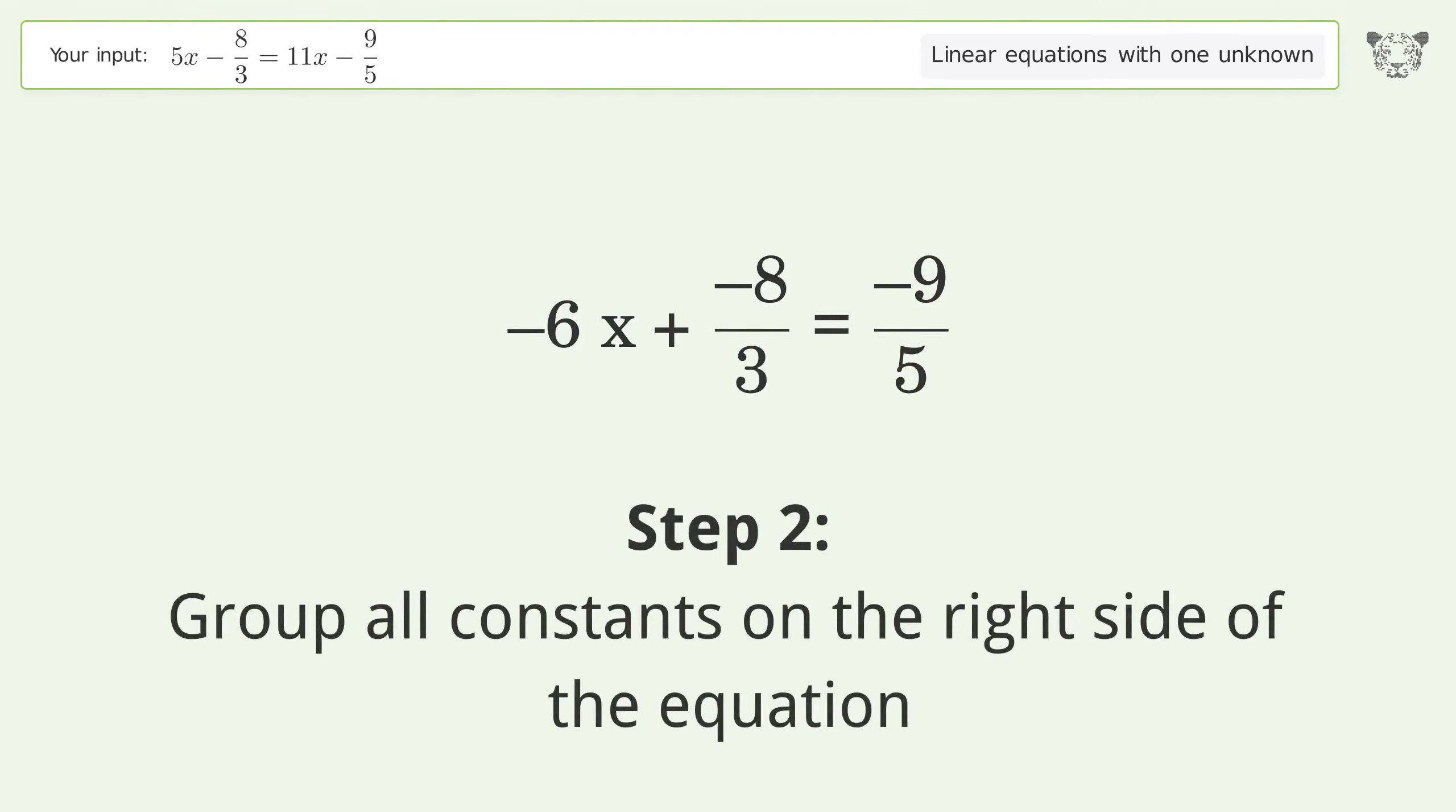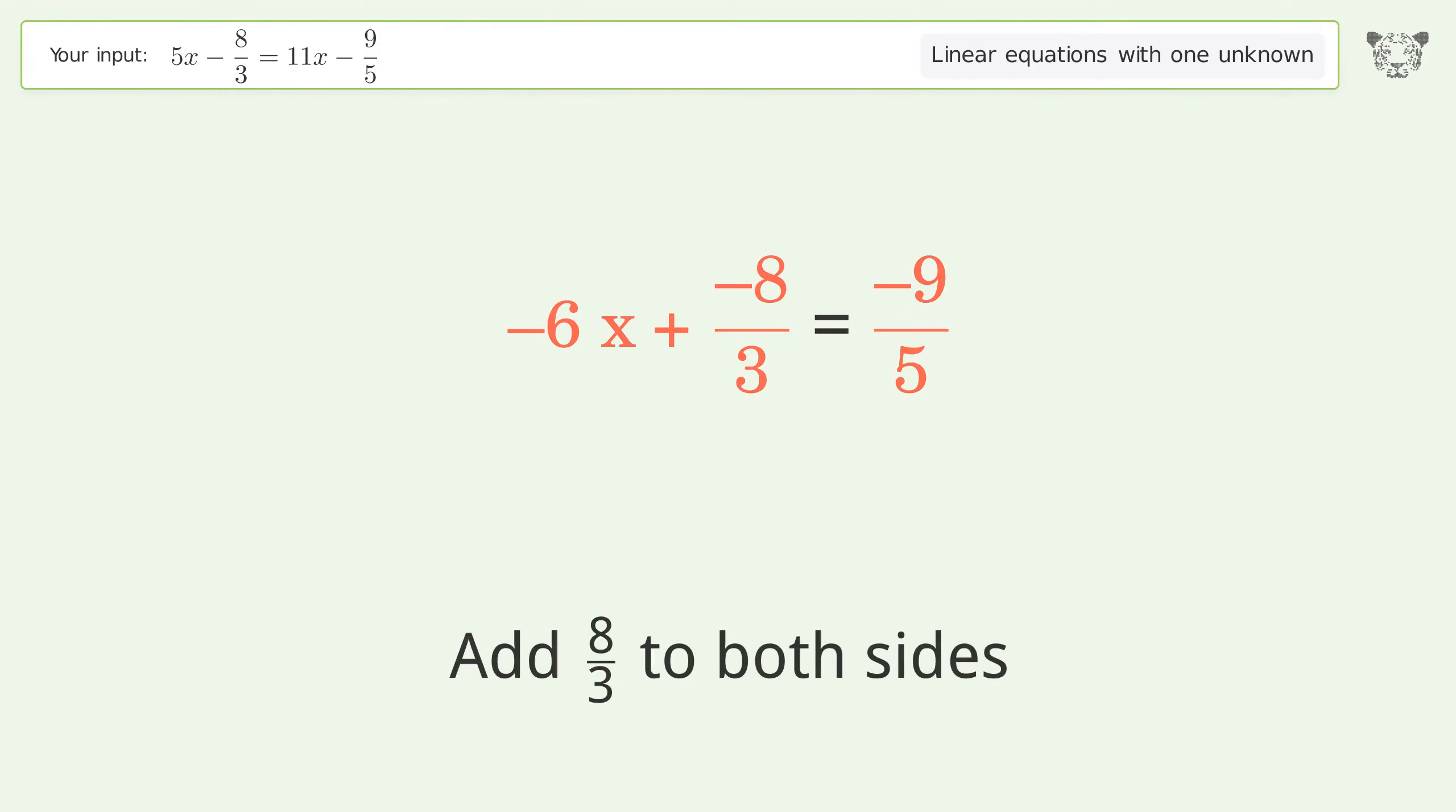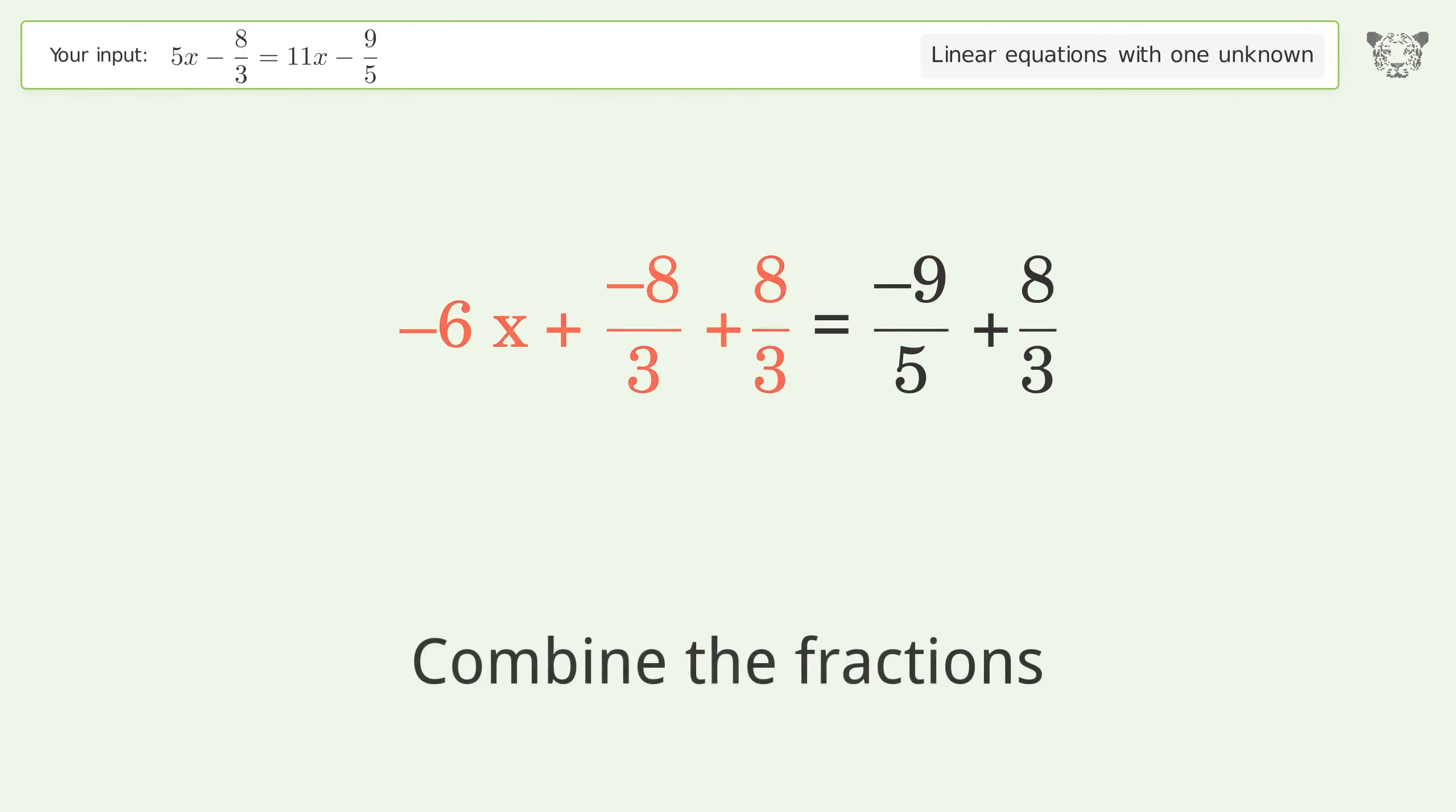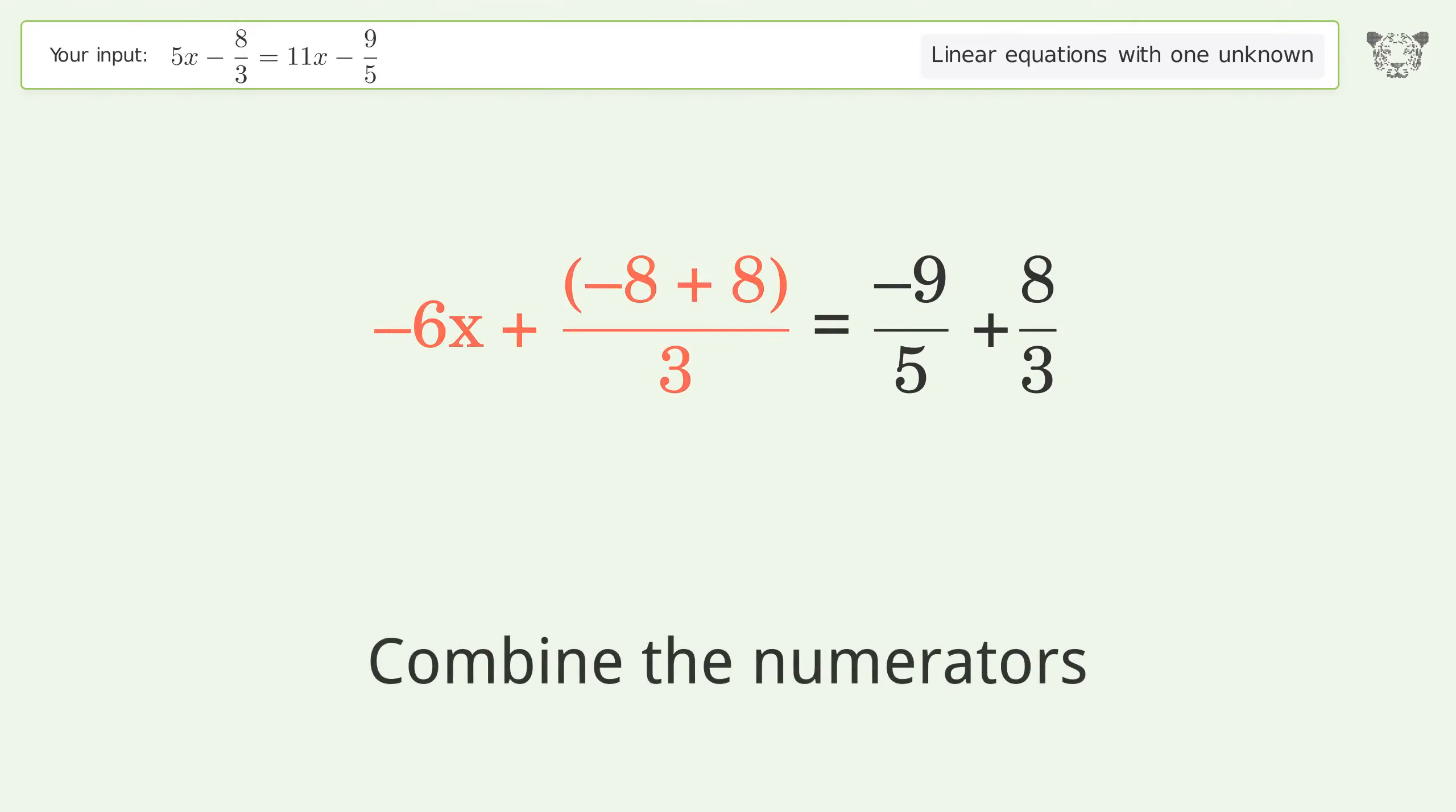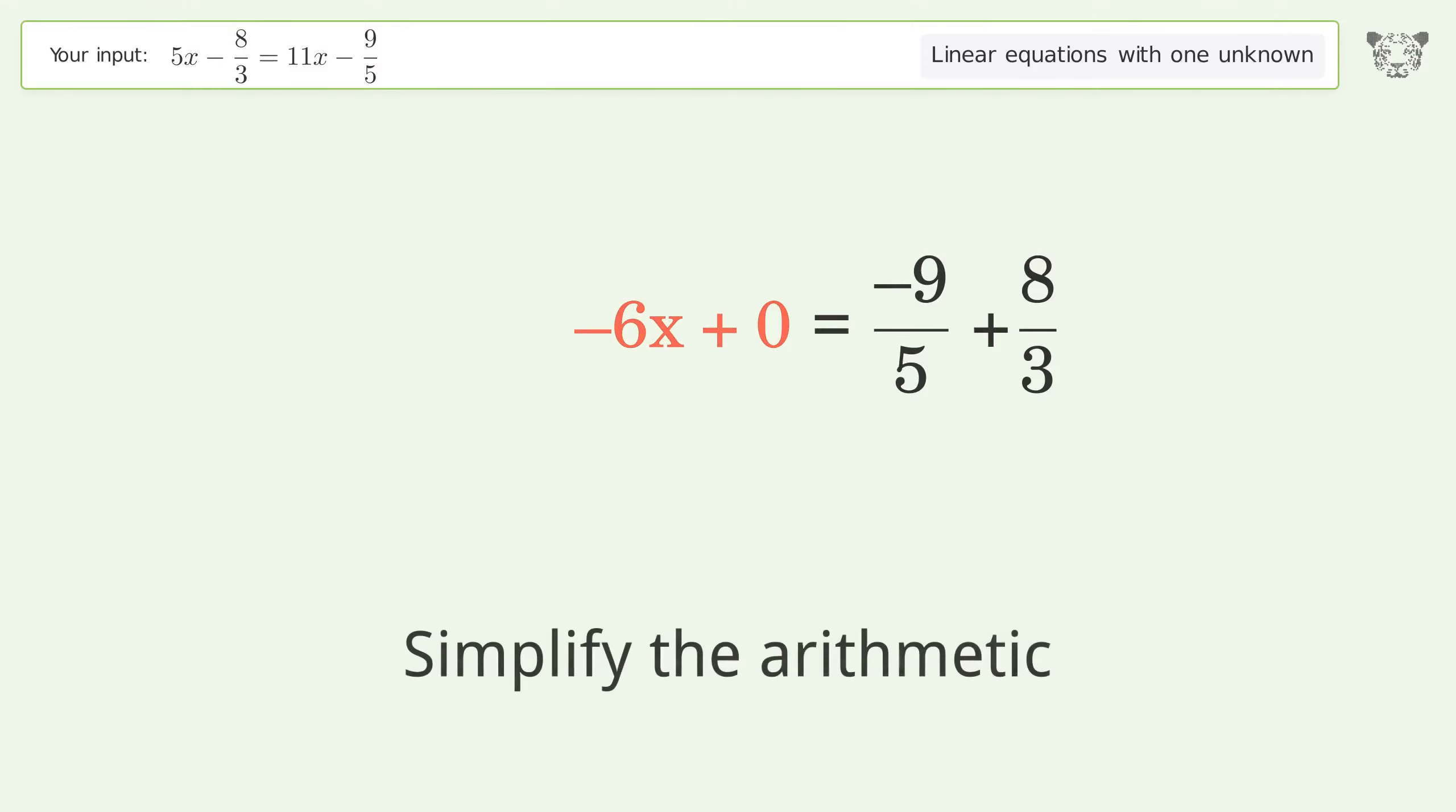Group all constants on the right side of the equation. Add 8 over 3 to both sides. Combine the fractions, combine the numerators, reduce the zero numerator, and simplify the arithmetic.